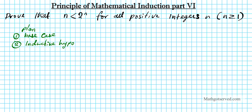For the inductive hypothesis we are going to assume that the statement is true for n equals k. Then the big part is the inductive step — that's part three. If we assume that n is true and can show that the next step is also true, then that pattern carries for all integers n where n is greater than or equal to 1.